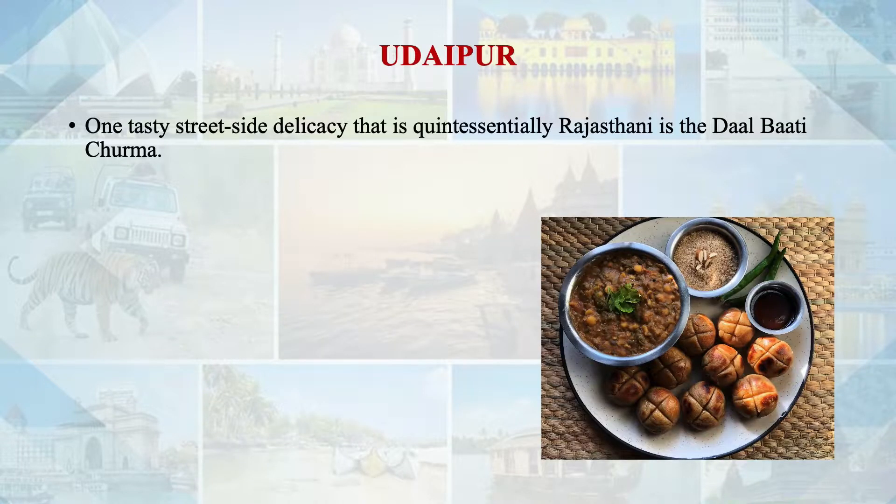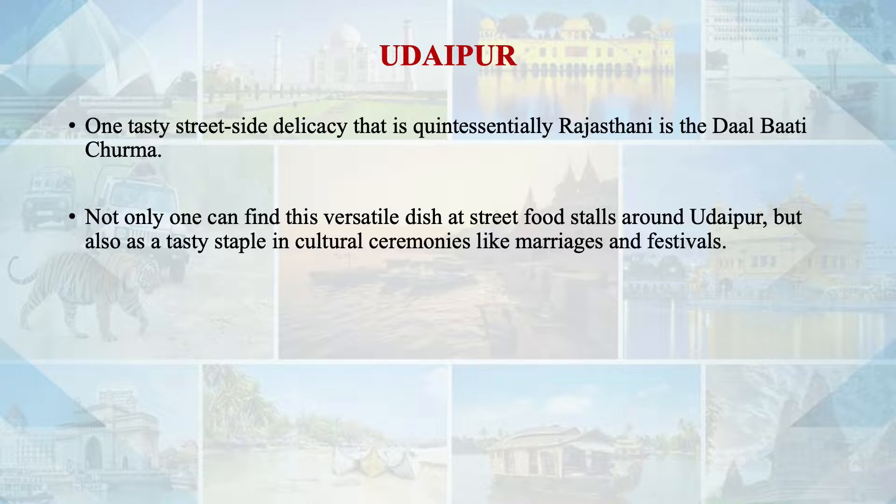Udaipur, known as the city of lakes, is also popular for its Rajasthani cuisine. Tourists visit not only for the street food but also to enjoy the local culture and natural beauty of Udaipur. We find an influence of food culture focused on the royal Rajasthani cuisine. This cuisine attracts tourists and we have various variants like dal bati churma and specific spicy dishes enjoyed by domestic as well as international tourists.